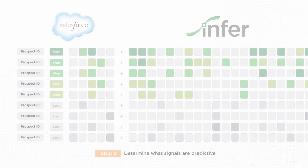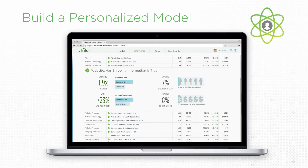Infer uses machine learning to test millions of combinations and determine the optimal formula. This is a fully automated process that produces a model that is personalized for your company.